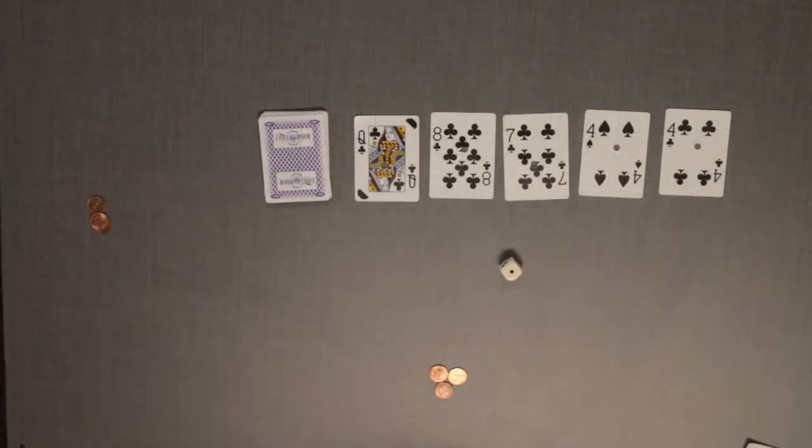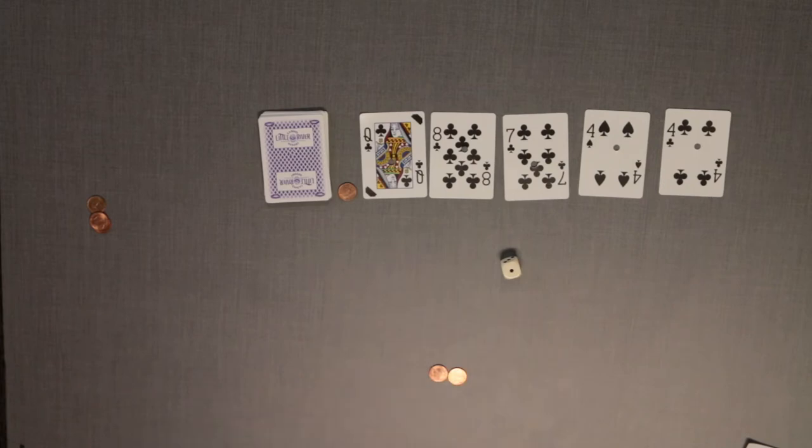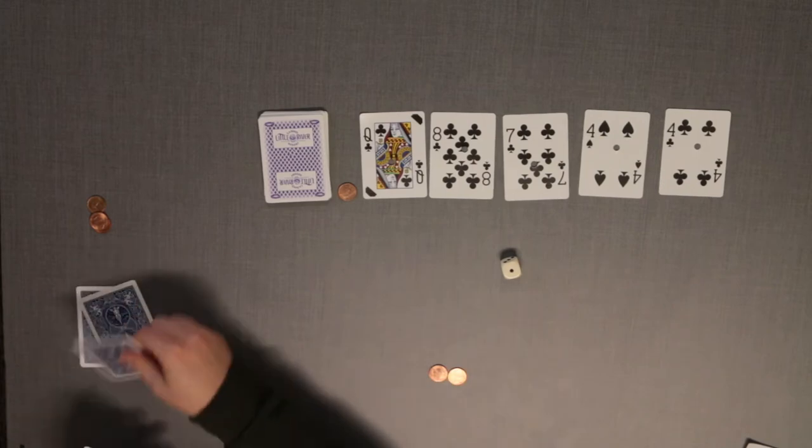The youngest player rolls the die. The number on the die determines the position of the decimal in the target number, with one being the far left and six being the far right.